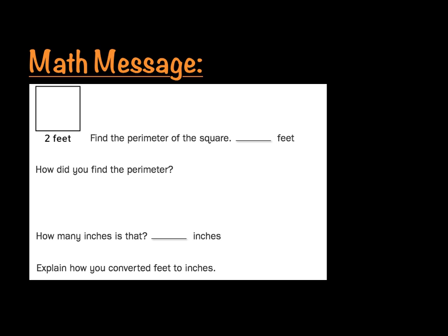So if we take a look at this square, we know since it is a square that it has the same length of sides. So if I've got one side that is two feet, then that means that this side is two feet, this side is two feet, and this side is also two feet. Now if we're going to find the perimeter of that particular square, how do we do that?